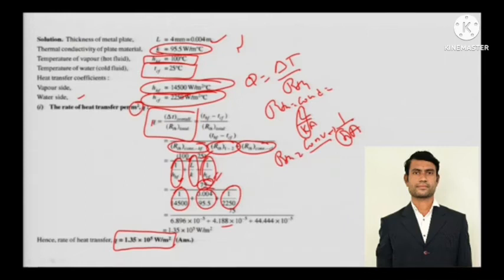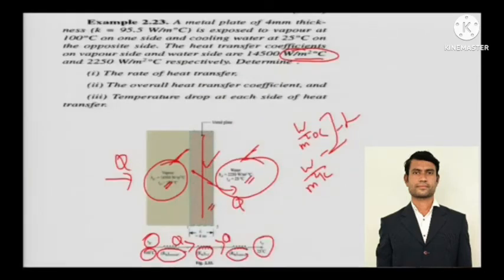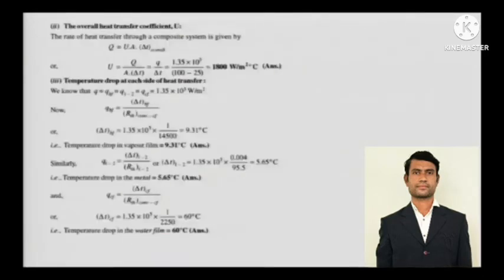When convection and conduction are combined, convert everything into an electrical resistance circuit. The resistances here are in series. If elements are in parallel, the equivalent resistance is found using the sum of 1/R — that type of numerical has been covered in the theory lecture videos.